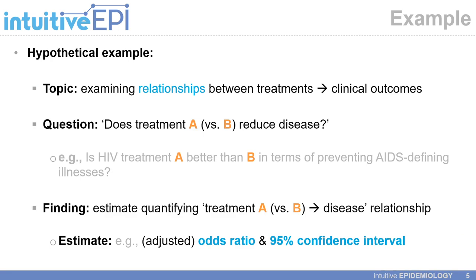In this video, we will follow through a hypothetical example. We will examine the relationship between a treatment and a clinical outcome. For example, does treatment A versus treatment B reduce disease? Specifically, is HIV treatment A better than treatment B in terms of preventing AIDS-defining illnesses? Our hypothetical finding will be a statistical estimate quantifying the relationship between treatment A versus B and its impact on disease, and our estimate will be what is known as an odds ratio alongside its 95% confidence interval.